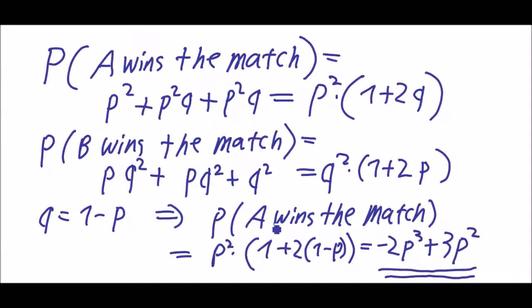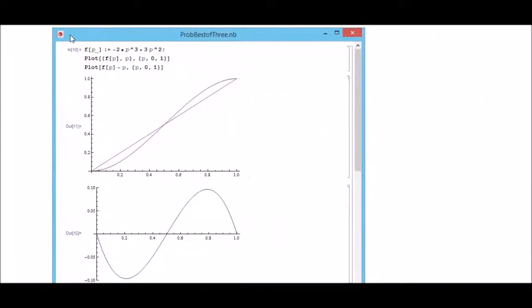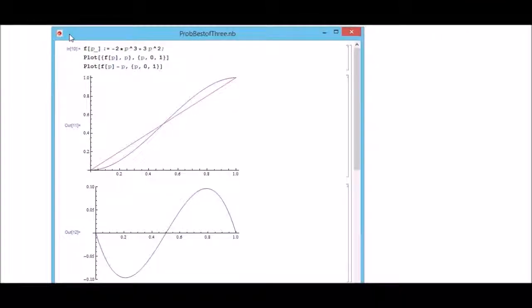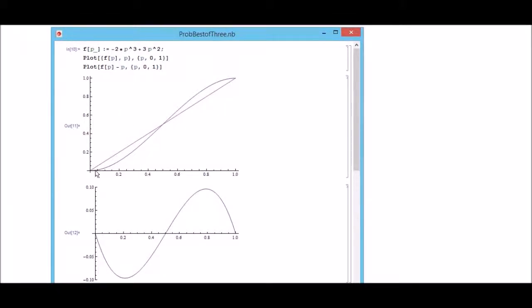What does it mean for the chances of winning the match? I just put it into Mathematica and as you can see the blue line is the function f of p, which is our probability of winning the match.